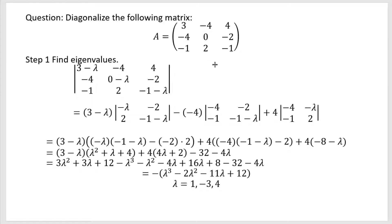First, step 1, you have to find the eigenvalues. Of course, to find the eigenvalues, you have to calculate the determinant of A minus lambda I and set it equal to 0. And for a 3 by 3 matrix, you have to do either row expansion or column expansion.